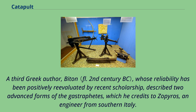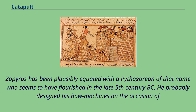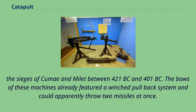A third Greek author, Biton, whose reliability has been positively re-evaluated by recent scholarship, described two advanced forms of the gastrophetes, which he credits to Zopyrus, an engineer from southern Italy. Zopyrus has been plausibly equated with a Pythagorean of that name who seems to have flourished in the late 5th century BC. He probably designed his bow machines on the occasion of the sieges of Cumae and Miele between 421 BC and 401 BC. The bows of these machines already featured a winched pullback system and could apparently throw two missiles at once.